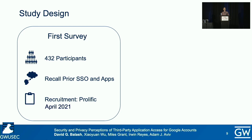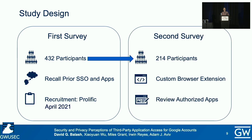Our study design consists of two online surveys. The first survey focused on asking participants to recall prior experiences with third-party apps and SSOs, and recruitment for both surveys was done via Prolific during the month of April 2021. We invited back 399 participants that have active Google accounts with SSOs and third-party apps to return for the second survey, and 214 of them completed the survey. We created a custom browser extension that collected in-the-wild data about users' actual SSOs and authorized apps. The extension was also used to display participants' specific third-party apps directly in the survey so we could ask questions about these apps.